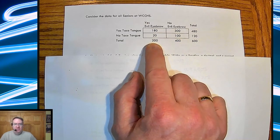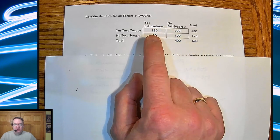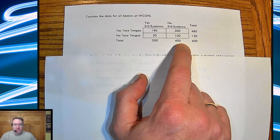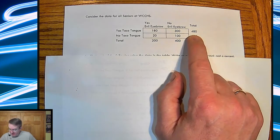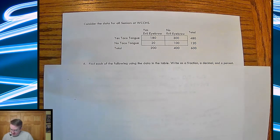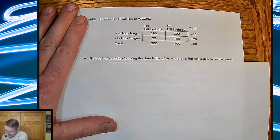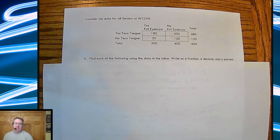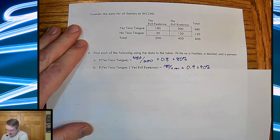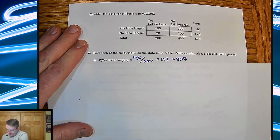So here is the data for all the seniors at Washington College Community High School. 600 seniors. 200 of them can do the evil eyebrow. 400 can't. 480 can do the taco tongue. 120 can't. And then there's the breakdowns there. So find each of the following using the data table. Write it as a fraction, a decimal, and a percentage. And that's, again, something else that's going to be good to get into practice of doing.